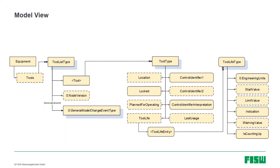Let's take a look at the part of the model. There is a video presentation about the whole Machine Tools Model, but today we will only look at the equipment part. Equipment contains a node called Tools, and Tools is a tool list as indicated by its type, tool list type. In this list there are individual tools represented by the tool type.